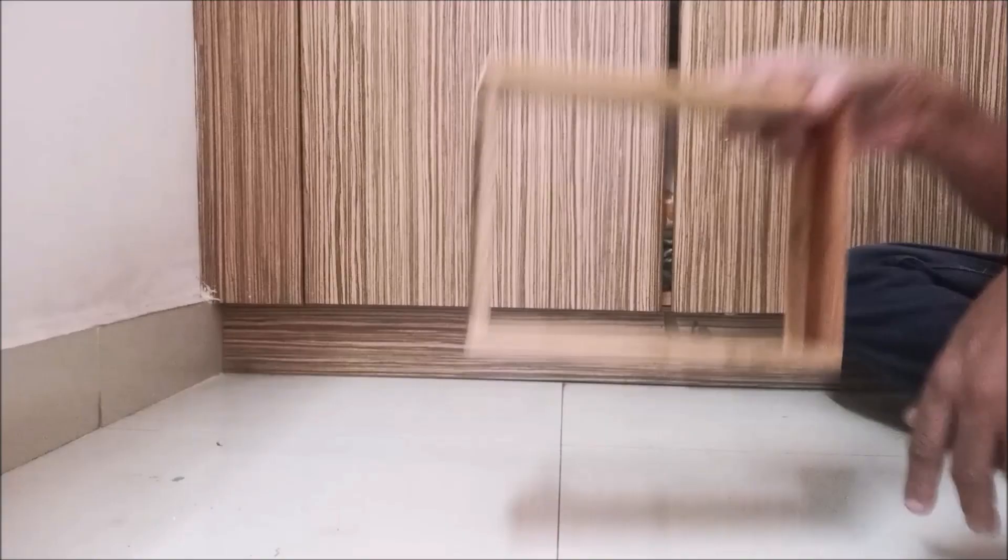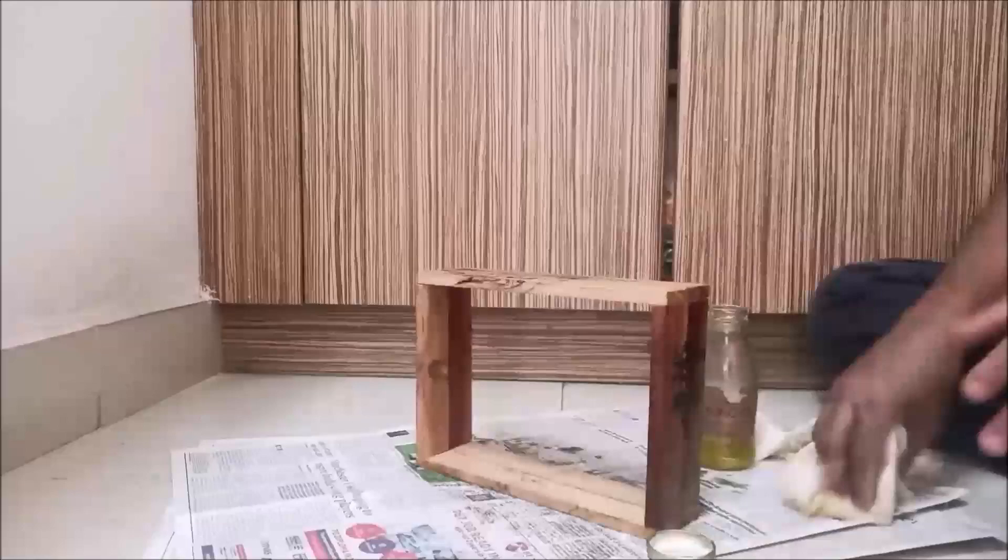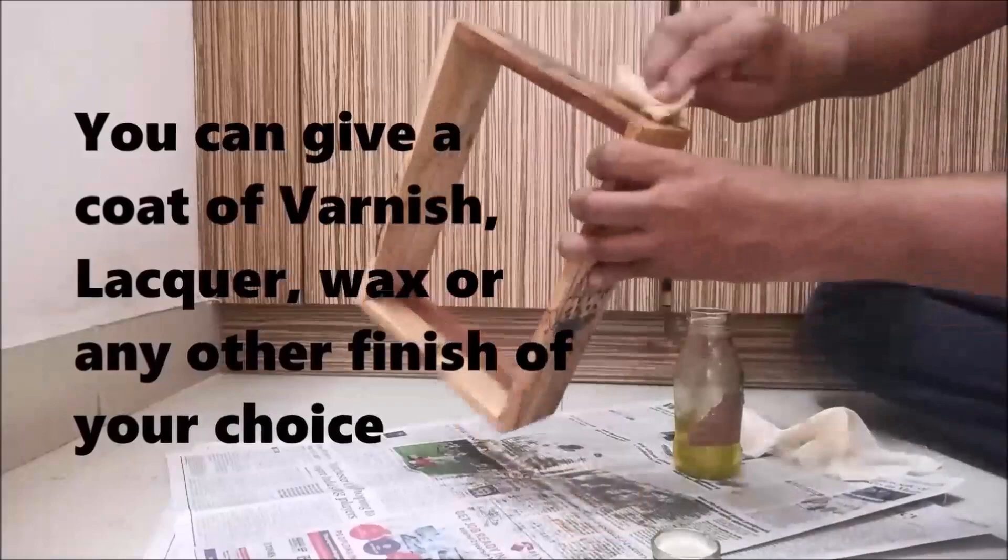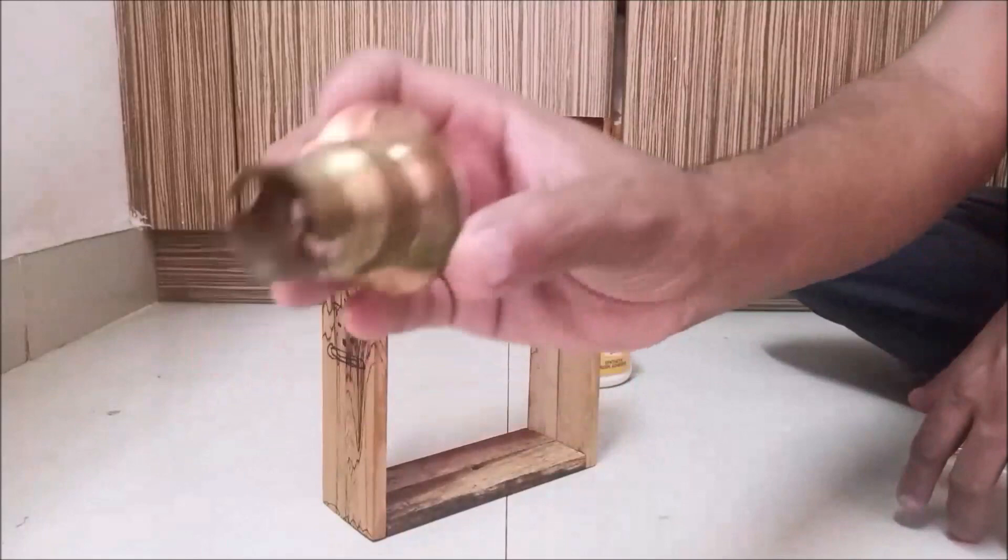I gave the frame a light sanding on the visible outer surface and finished it with three coatings of tung oil. I used a batten brass B22 holder for the lamp. It can be easily screwed onto or glued to the wooden base.